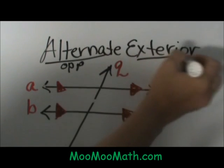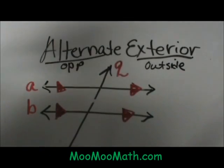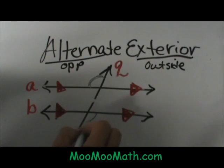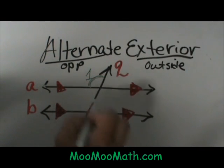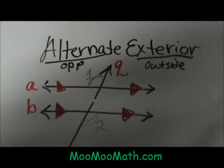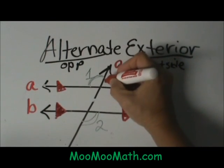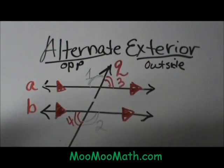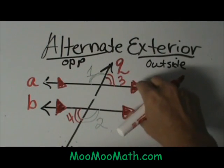So alternate exterior is outside in the bun area. I'm going to mark these in different colors. We've got an alternate exterior angle here and its partner is the one opposite. So I'm going to call this angle one and angle two — those two are alternate exterior angles. Now I'm going to mark another pair because we do have another set. We've got one here and I'll mark that three, and one here and that's four. Those two angles are also alternate exterior angles.